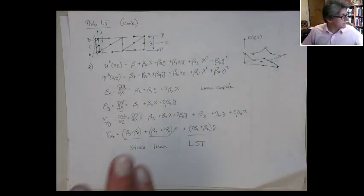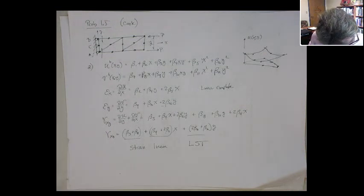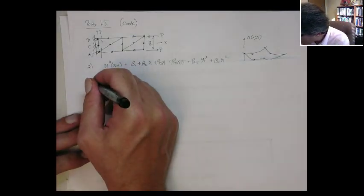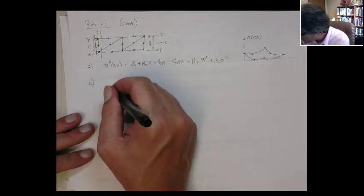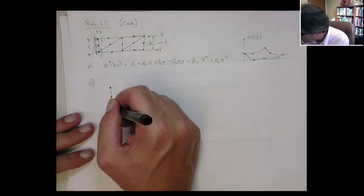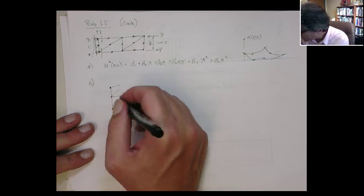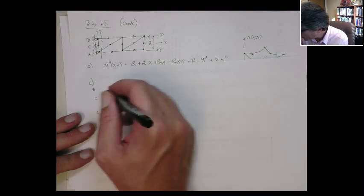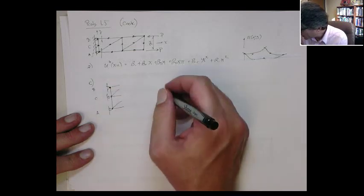Now, part C asks for an alternate arrangement. Really, any type of arrangement that allows free lateral contraction will work. So you could actually, on this edge, these are the points A, C, and B, you could pin the top and put the bottom ones on rollers. That would work.